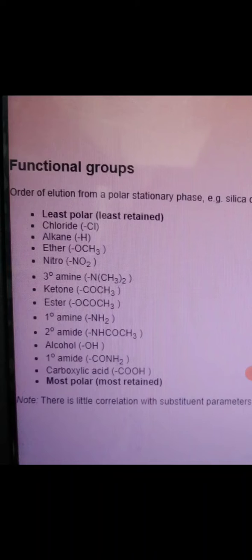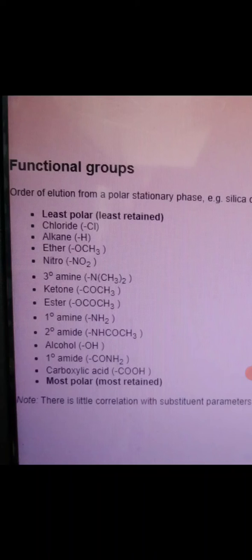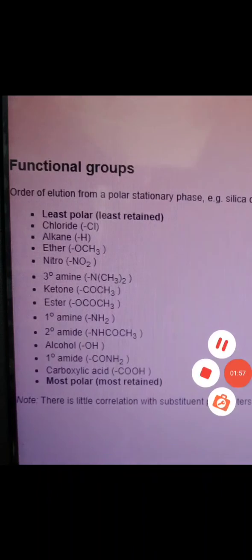In TLC, if you keep a reaction with an alkyl halide as one reagent and carboxylic acid as another, you can find the product based on the TLC result. For example, if carboxylic acid reacts with an amine, it will form an amide. If you don't know the polarity of the functional groups, you cannot easily judge which spot is your product. So understanding functional groups is very important.